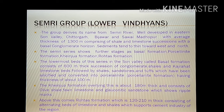The lowermost bed of the Semri series in the Son Valley is called the basal formation, consisting of a 600-meter-thick succession of conglomerate, shale, and Kajrahat limestone beds. This is followed by shale, sandstone, and tuffs which have been silicified and converted into porcelainite, forming the porcelainite formation, which has a thickness of about 100 meters.